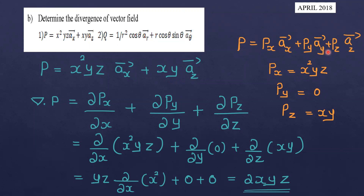The components are: Px equals x squared yz, Py equals 0, Pz equals xy. Applying the divergence formula: del-dot-P equals dou Px by dou x plus dou Py by dou y plus dou Pz by dou z. Substituting: dou by dou x of x squared yz plus dou by dou y of 0 plus dou by dou z of xy.